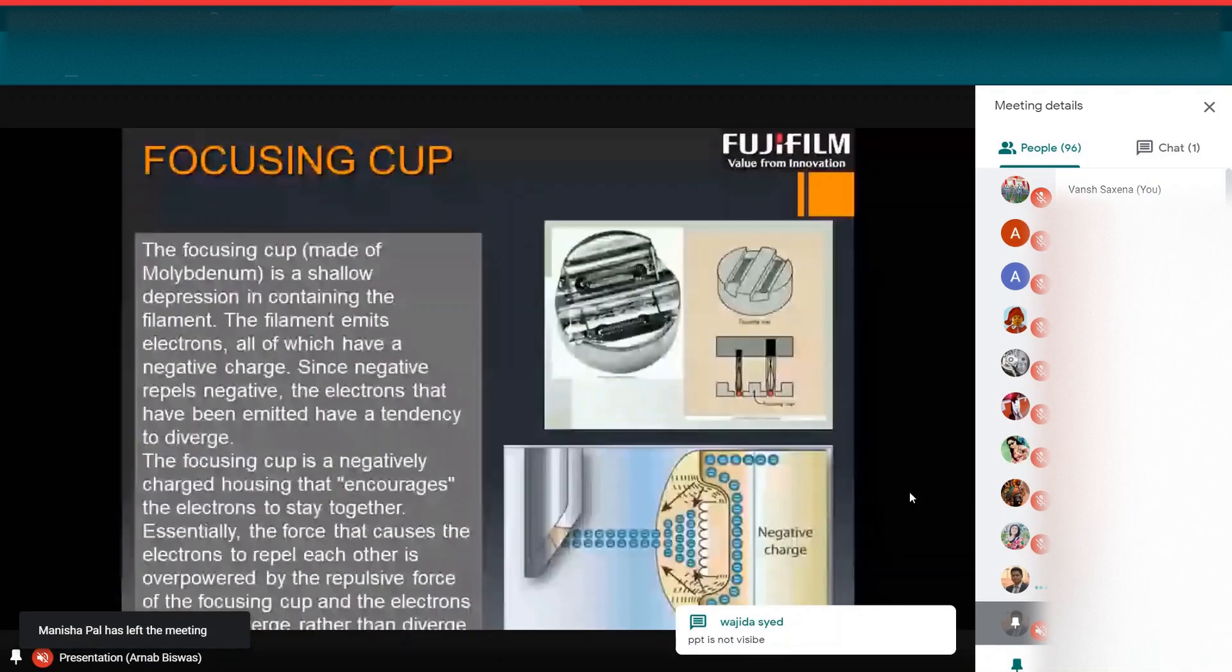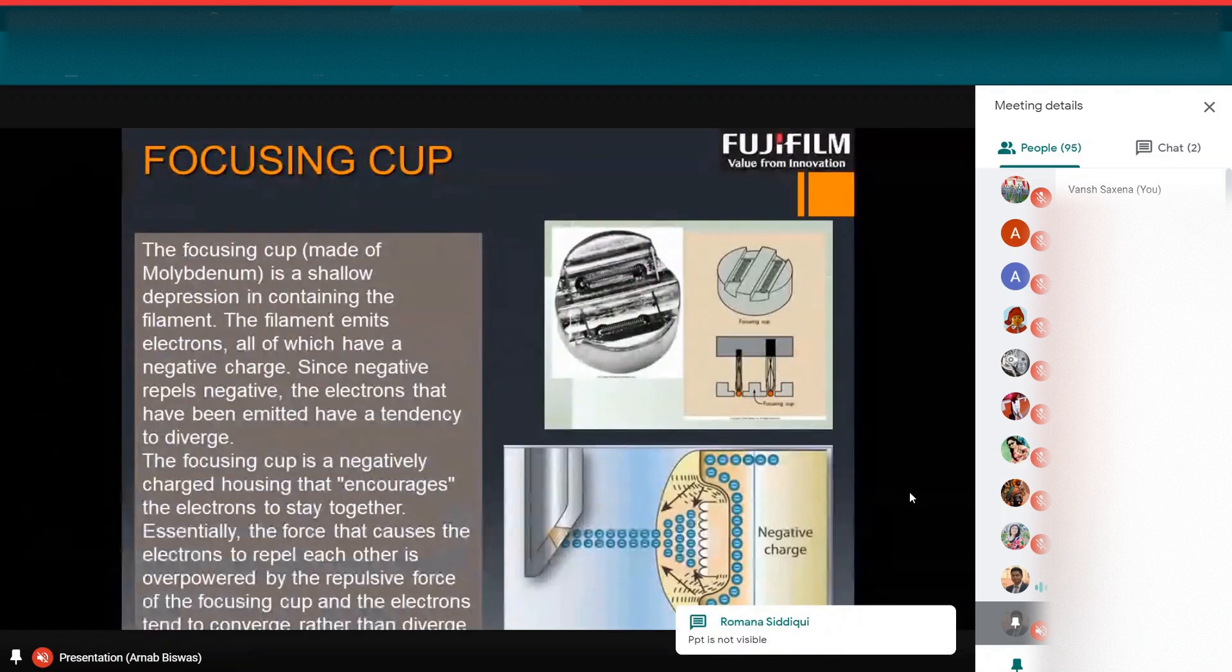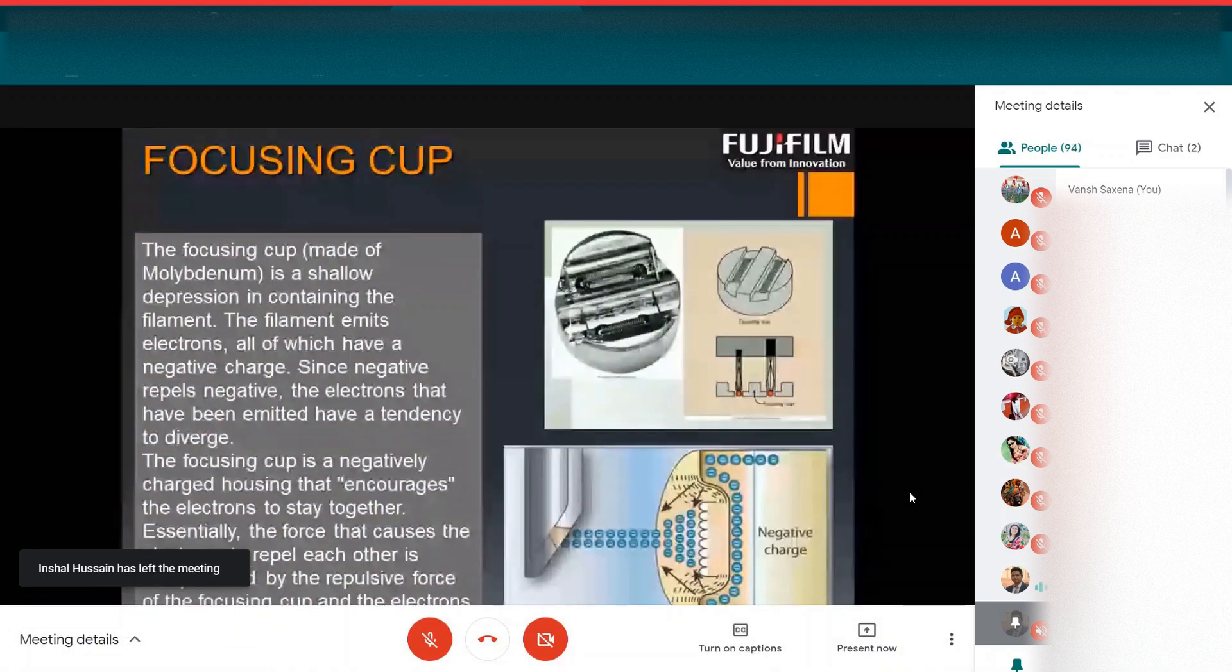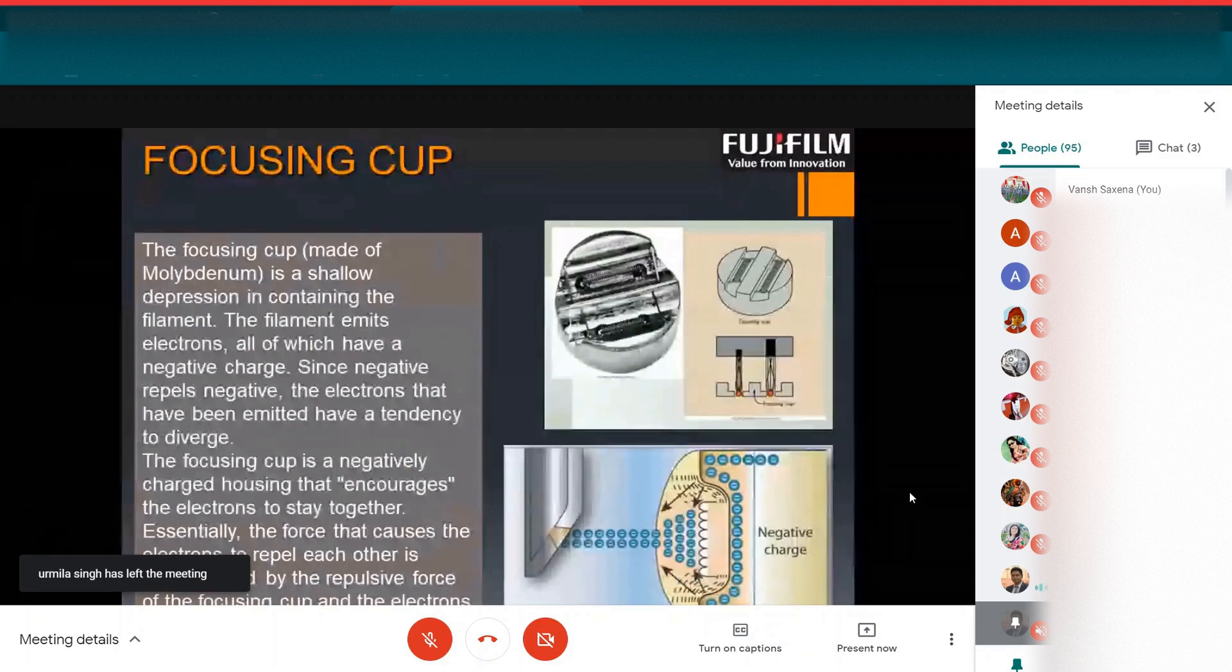What is focusing cup? Focusing cup is a shallow depression containing the filament which is made of molybdenum. The filament emits electrons, all of which have a negative charge. Since negative repels negative, the electrons that have been emitted have a tendency to diverge. The electrons which we produce are negatively charged electrons. We all know that negative repels negative.